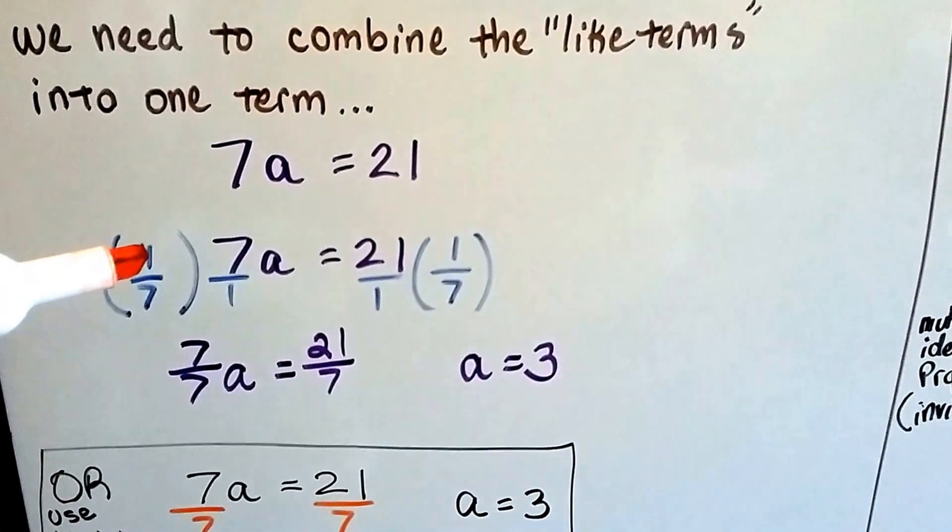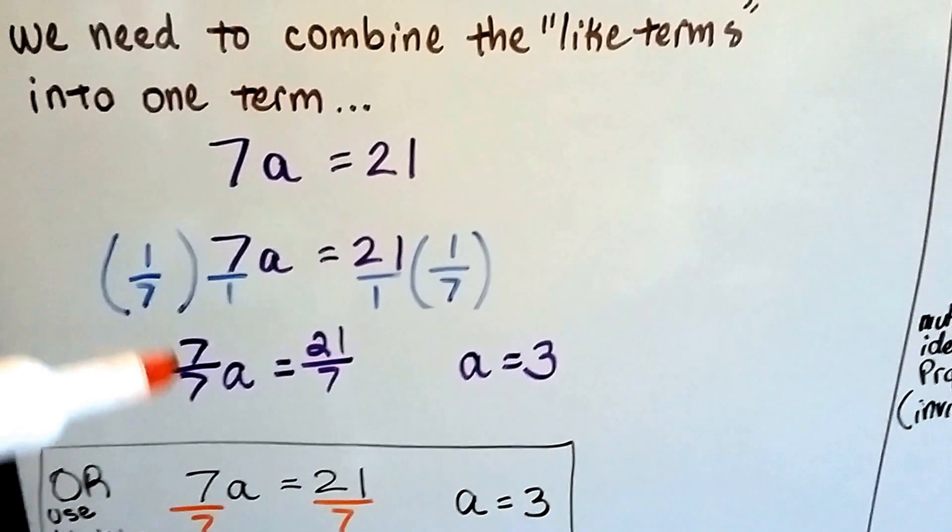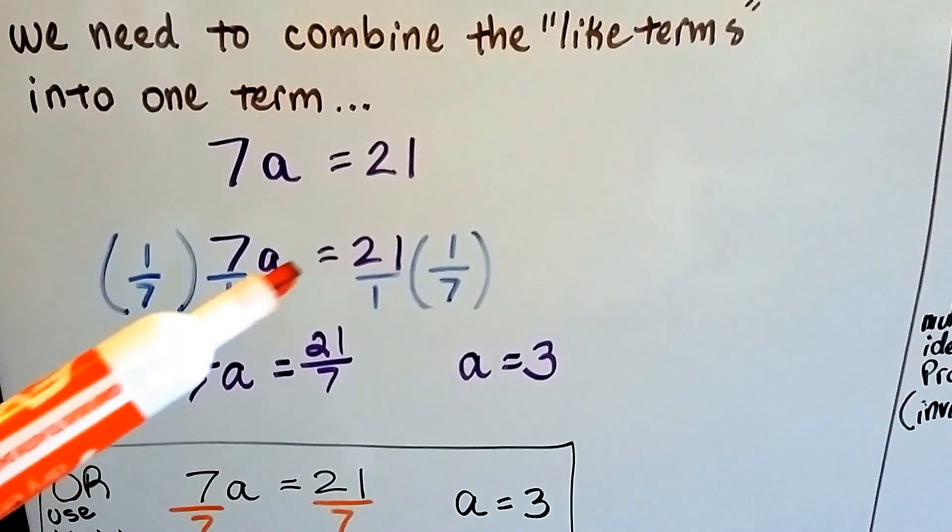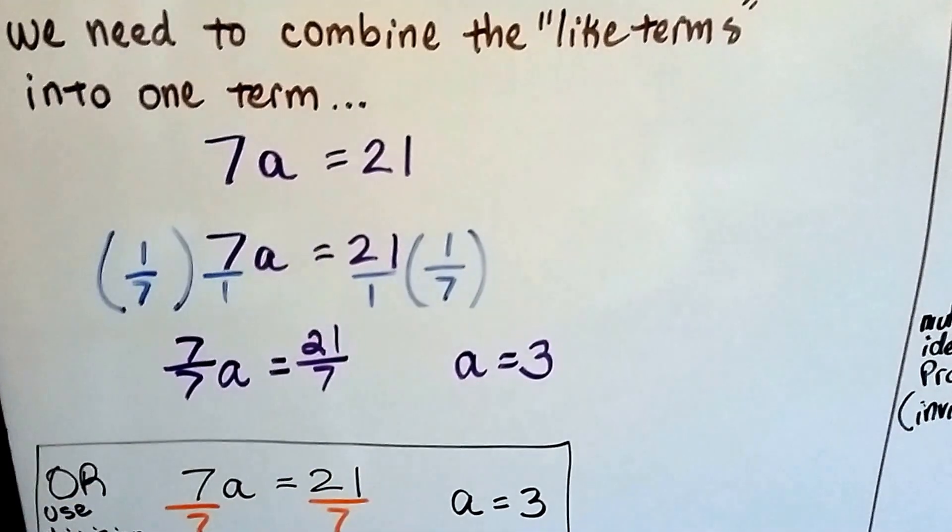And on this side we get 7 over 7a, and on this side we get 21 over 7, and that equals 3.